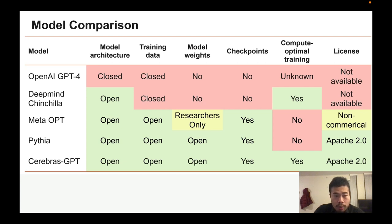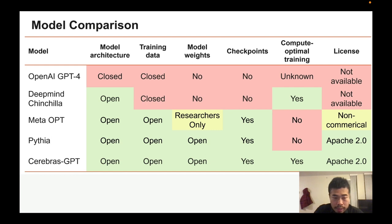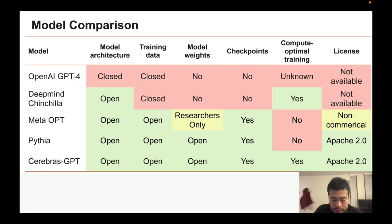OpenAI's GPT-4 has a closed model architecture, unknown training data, and model weights and checkpoints are not available — basically everything's not available. You need to pay and sign a contract to use it. DeepMind's Chinchilla model is a 70 billion parameter model, but the training data is undisclosed and weights are not available. Meta's OPT has available model weights, but only for researchers — not for commercial use, similar to LLaMA. Cerebras GPT, by contrast, is fully open source under the Apache 2.0 license, giving you a lot of freedom.